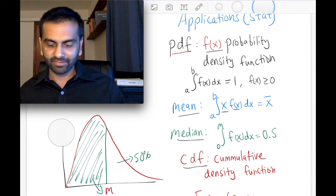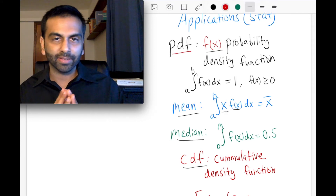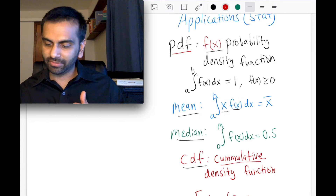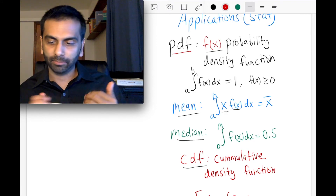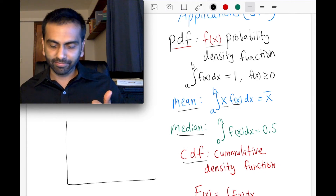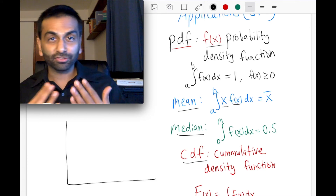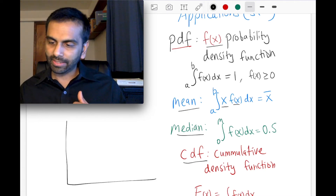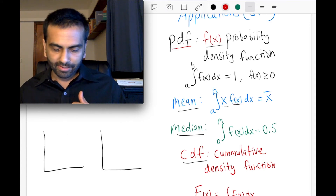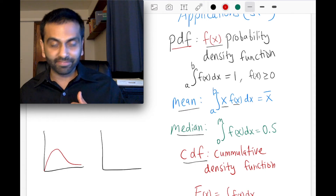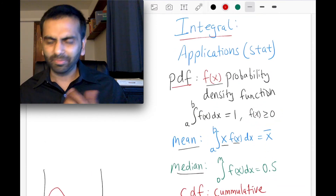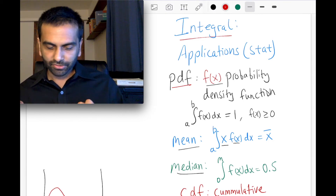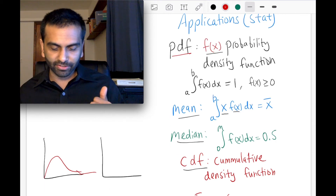Finally, there's the concept of the cumulative density function, or CDF. It gives the probability of that value or lower — not just the probability of that exact value. Algebraically, the CDF is the integral of the PDF. As long as the PDF is positive, the CDF is increasing; whenever the PDF is zero, the CDF is flat. The PDF must always be non-negative because you can't have a negative probability.